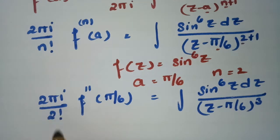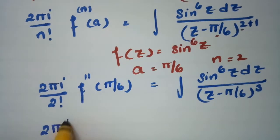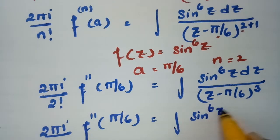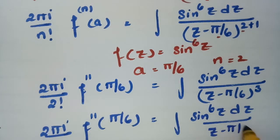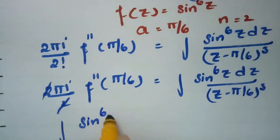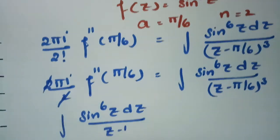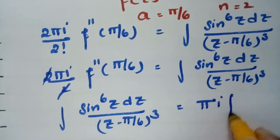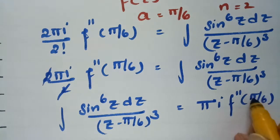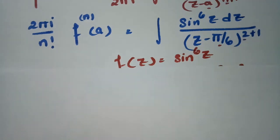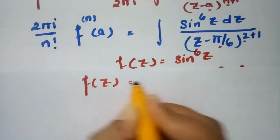So 2 factorial is 2, giving 2πi divided by 2 times the second derivative of f at π/6. Cancelling the 2, the integral of sin⁶z dz divided by (z minus π/6)³ equals πi times f double dash at π/6.